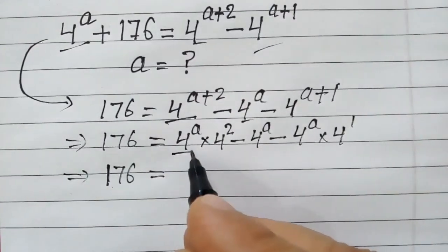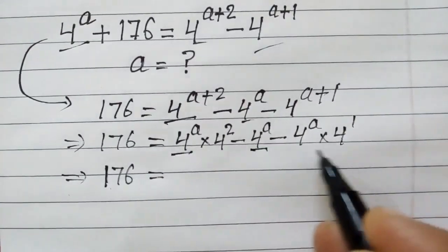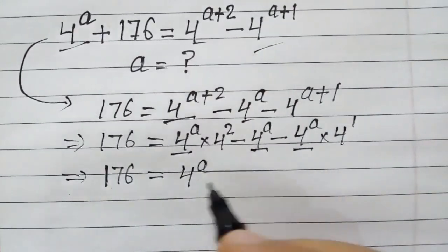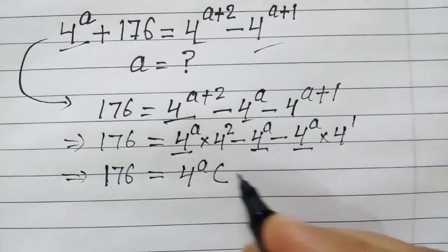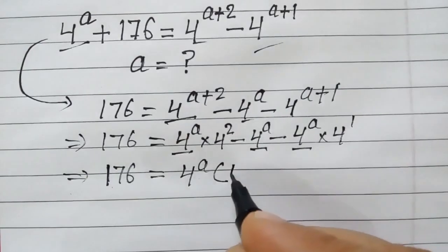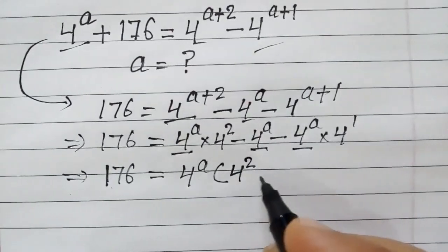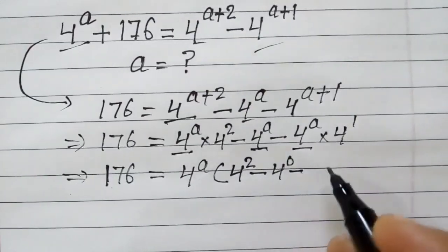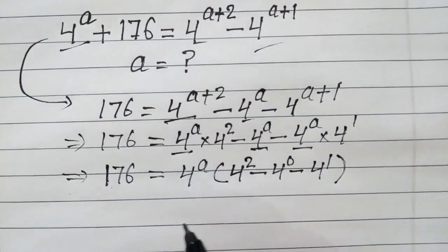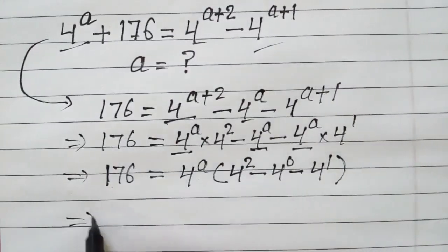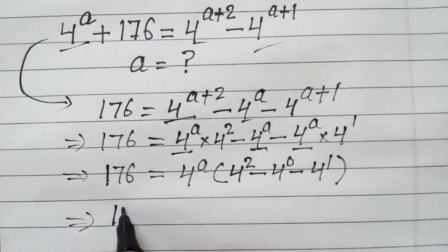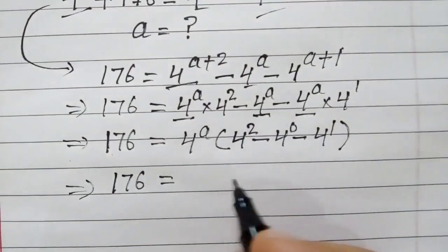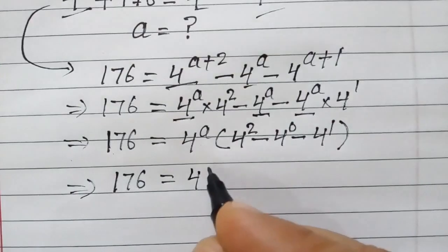Now we will take 4 to the power a as common. So we have 4 to the power a, multiplied by 4 squared minus 4 to the power 0 minus 4 to the power 1. In the next step, 176 is equal to 4 to the power a...